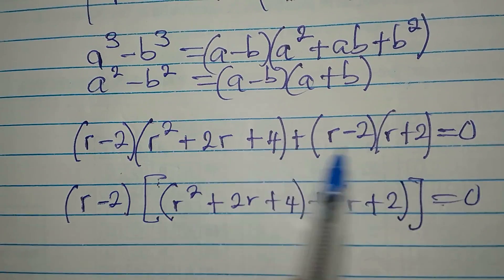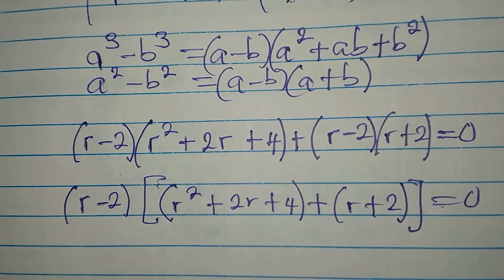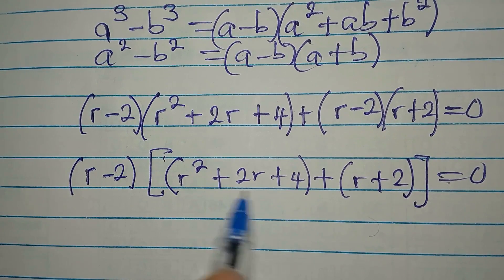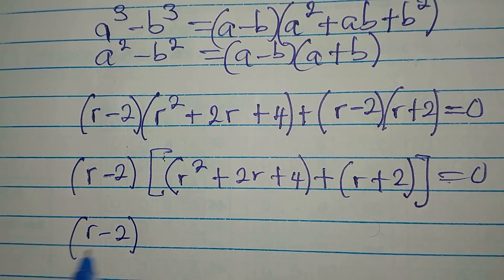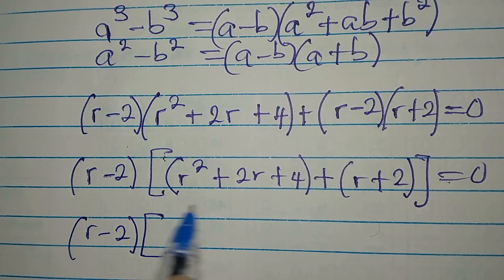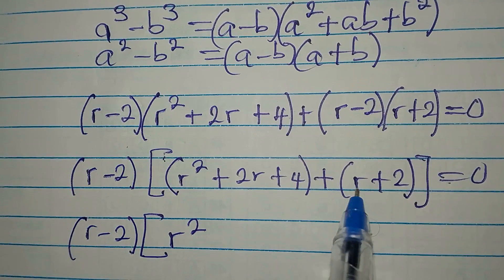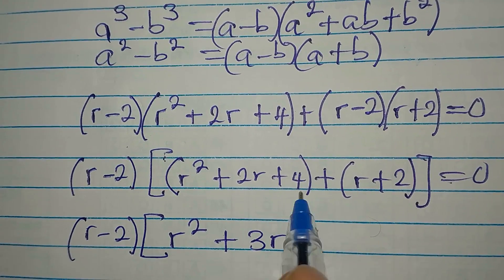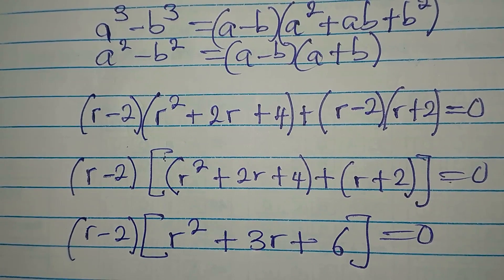Let's verify by opening the bracket again — it should give us back what we had. Now, with r minus 2 still as the common factor, opening the bracket gives us r squared, then 2r plus r gives us 3r, plus 4 plus 2 gives us 6. So we have r minus 2 times r squared plus 3r plus 6 equals zero.